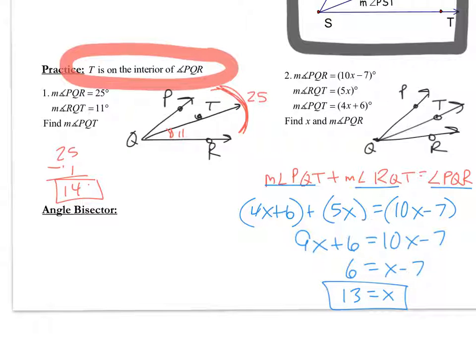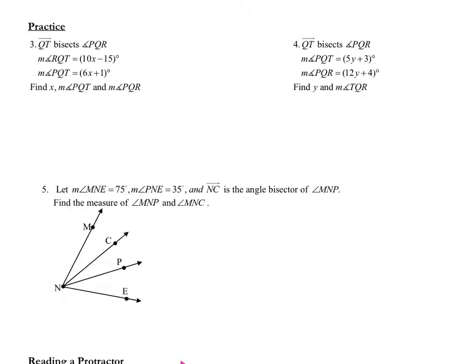Now am I done? I said this yesterday. You want to make sure that you're done with the problem. Look back up at the problem. Did they only want us to find X? No. They wanted us to find PQR as well. They told us it was 10x minus 7. Plug in what you know. So 10 times 13 minus 7, that's 130 minus 7, or 123. That is the angle measurement for PQR.